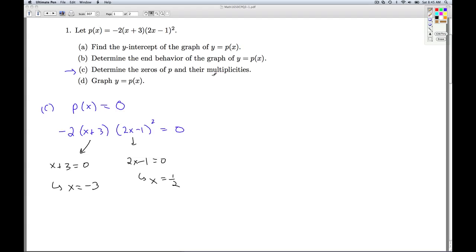Now what's this idea of multiplicity? I look at the quantities that these came from. X equals negative 3 came from this quantity and this quantity is to the first power, so we would say this has multiplicity one. X equals a half came from this quantity, and this quantity is squared, so this is multiplicity two.